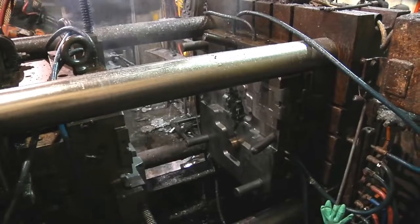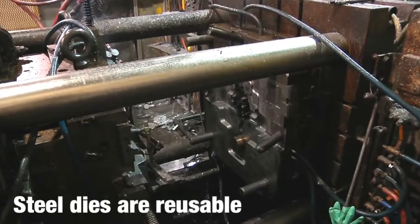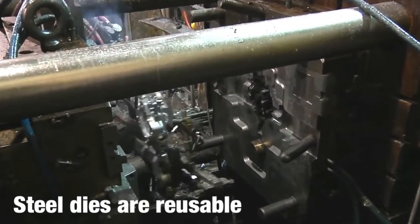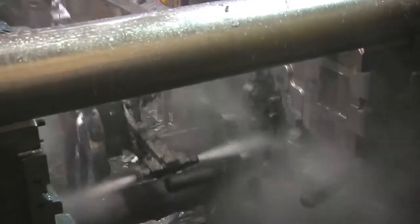In the die casting process, the reusable steel dies, or molds, are preheated and coated with a die release agent to lubricate and protect the surfaces of the dies before each use.